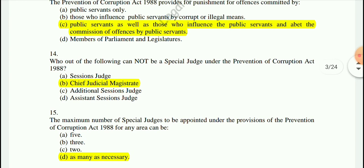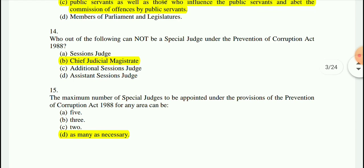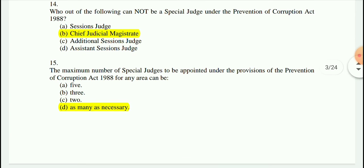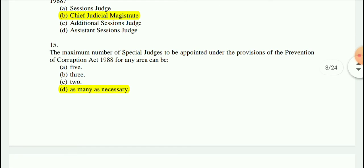Question 14: Which of the following cannot be a special judge under the Prevention of Corruption Act? The answer is that a Chief Judicial Magistrate (CJM) will not be a special judge.